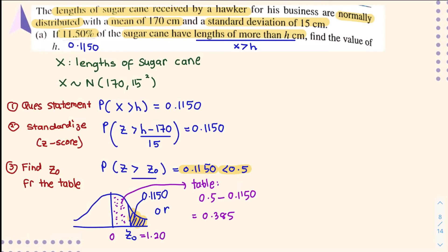So you have z equals 1.20. Now once you get your z, you can solve for h, where z-note is (h minus 170) over 15 equals 1.20. Substitute and use algebra to solve for h. You will get h equals 188 cm.